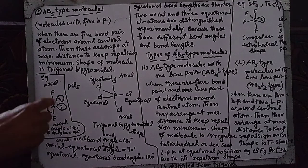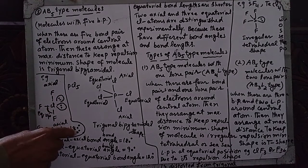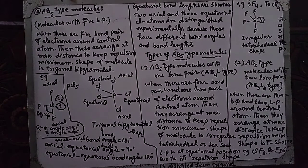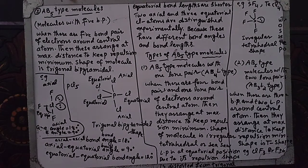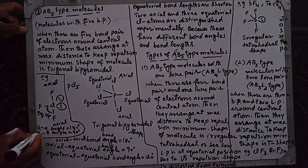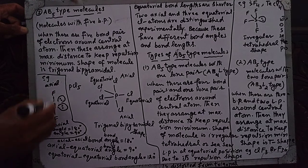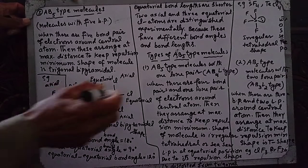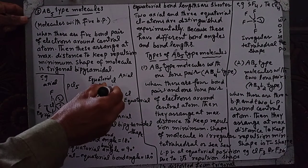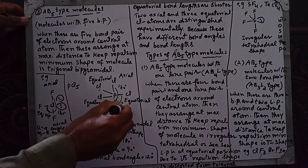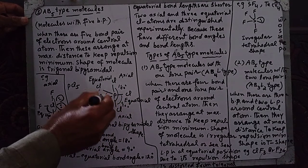In the T-shape, the axial-axial bond angle is 180 degrees, and the axial-equatorial bond angle is 90 degrees. The equatorial bond angle is 120 degrees.